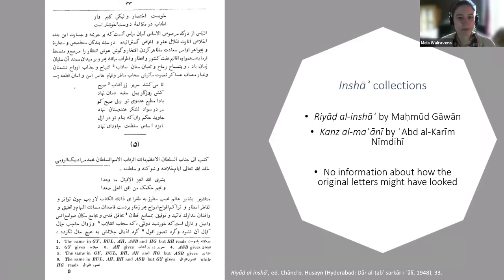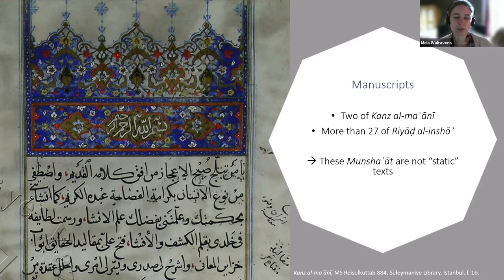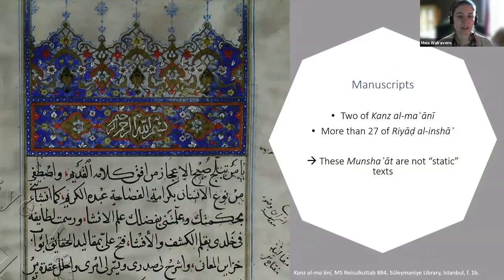Both collections have been edited, and you can see here a random page from the published edition of Riyad al-Inshah. The editions are very helpful and make our lives a lot easier, but it's also always worthwhile to look at the manuscripts. At this point we know of two existing manuscripts of Kanz al-Ma'ani and more than 27 of Riyad al-Inshah. And something that becomes clear from looking at these different manuscripts — not directly evident when working with editions alone — is that these Inshah collections are not static texts, but very versatile in a number of ways.